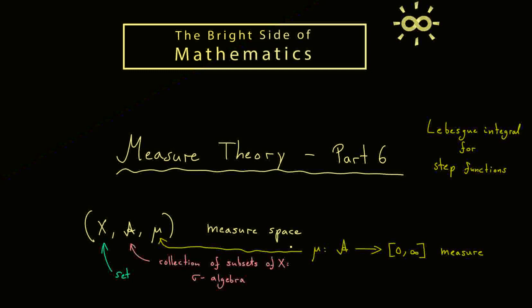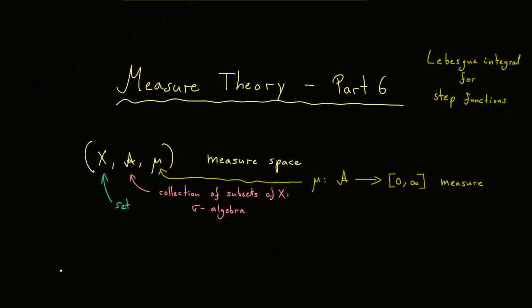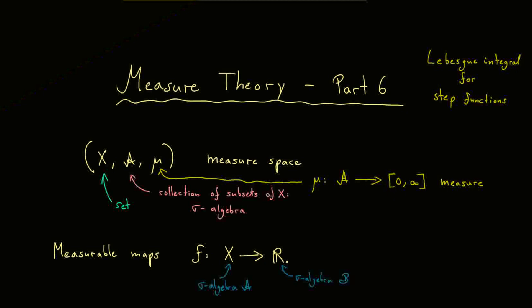With respect to this abstract measure space, we want to integrate some special functions. Indeed what we need are measurable maps defined in the last video. I will use the letter f for such maps that start with x and go into the real number line. You should not forget that we have a sigma algebra on the left, namely a, and also a sigma algebra on the right, and there we have the Borel sigma algebra. Measurable means that all the pre-images from elements of the sigma algebra here lie in the sigma algebra a. In other words, the pre-image of a set E is in A for all Borel sets E.